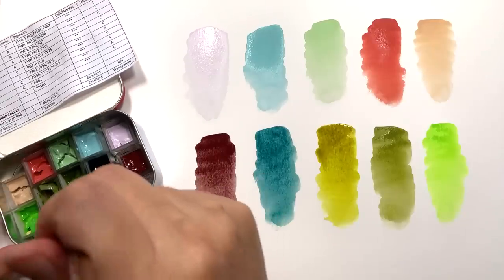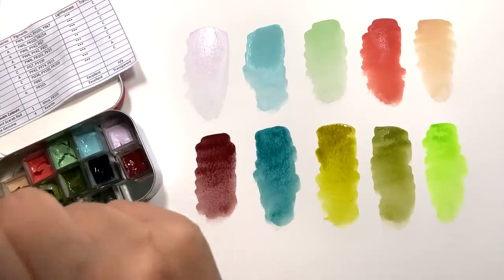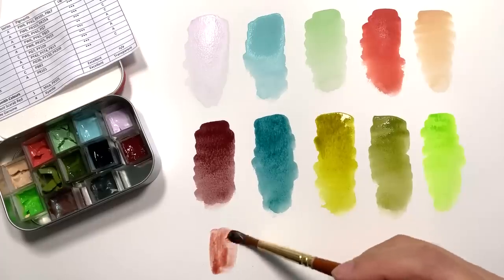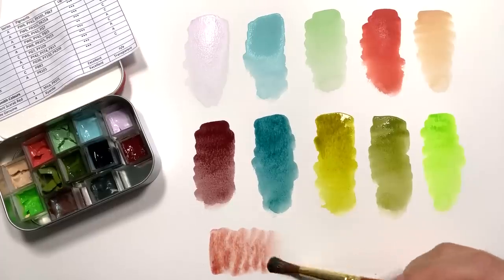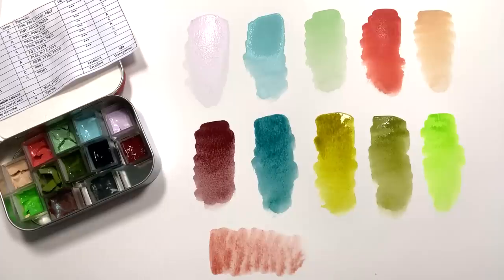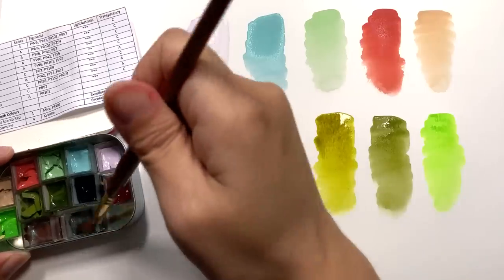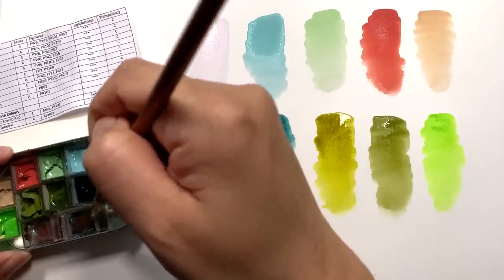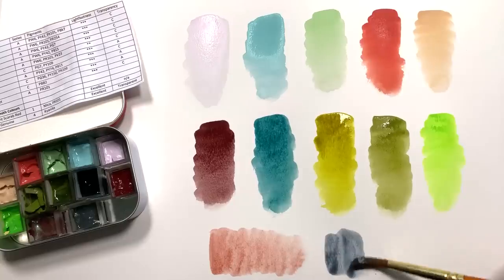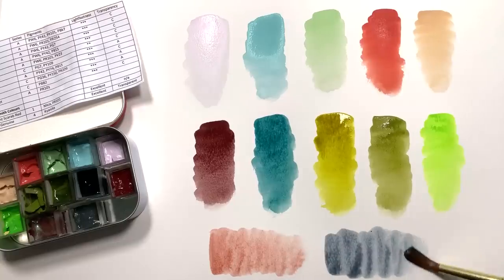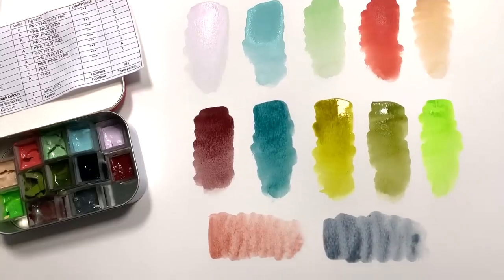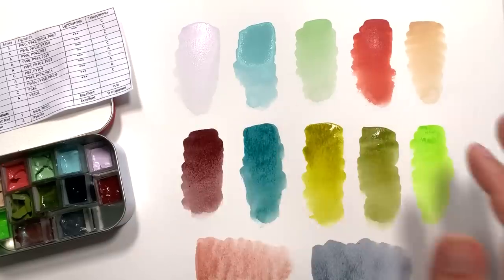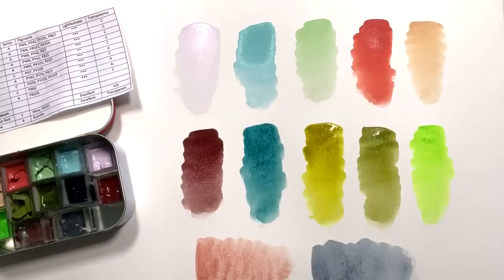And then we have Daniel Smith's Iridescent Scarab Red, which is a lovely earthy color. And then we have Cyanite, which we've seen on this channel before, in my Primatex range. It is a super sparkly color. As you can see,